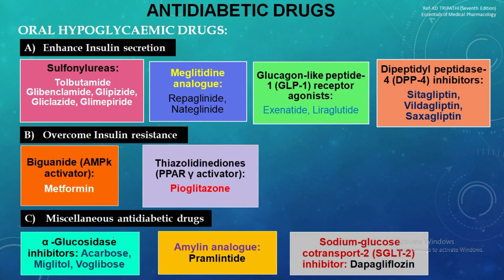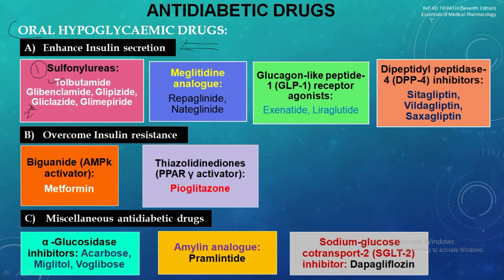Now focusing on the classification of oral hypoglycemic agents. The first major class is insulin secretion enhancers, which include sulfonylureas — first generation: tolbutamide; second generation: glibenclamide, glipizide, gliclazide, and glimepiride. The next class is meglitinide analogs: repaglinide and nateglinide. The third class is GLP-1 receptor agonists: exenatide and liraglutide. The fourth class is DPP-4 inhibitors: sitagliptin, vildagliptin, and saxagliptin.